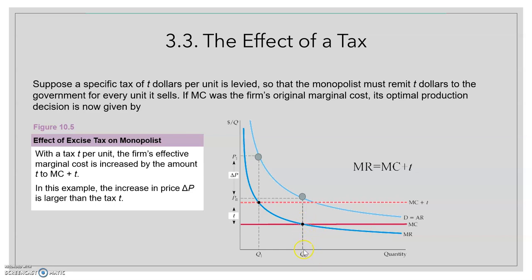And if we draw a vertical line from this point to the average revenue, we find the price before the tax, P0, and then we have Q0.